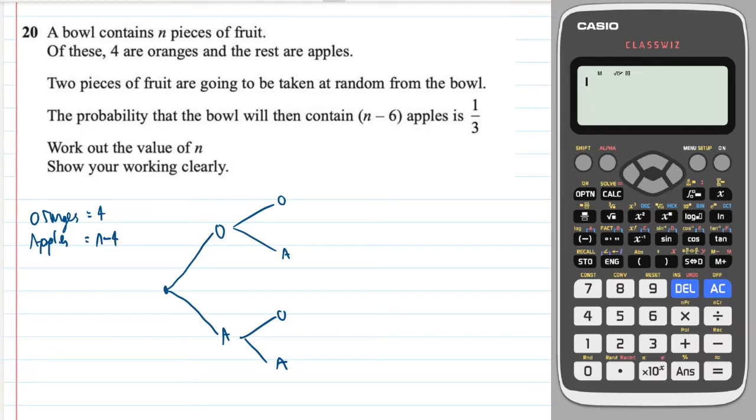So the only way that this can occur is if you take an apple followed by an apple. And we know the probability of that is one third.